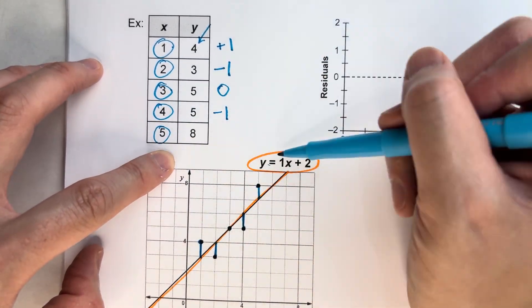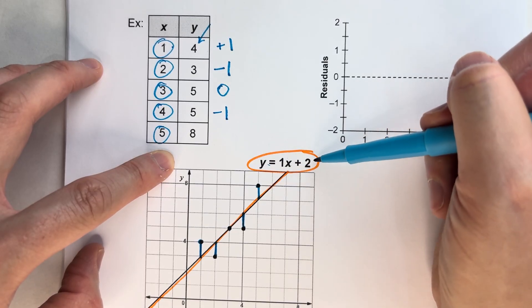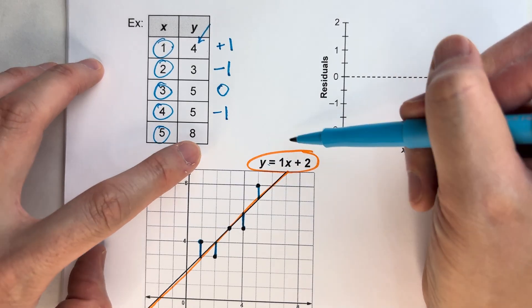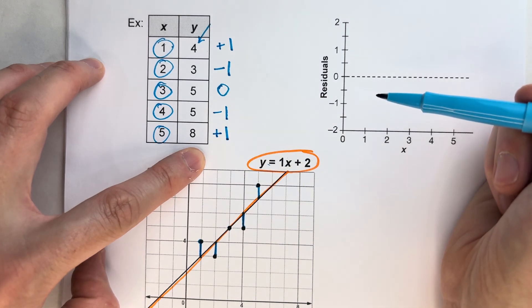And then finally, 5. 5 times 1 is 5, plus 2 is 7. I predicted 7, I got 8. So I was actually 1 above what I predicted.